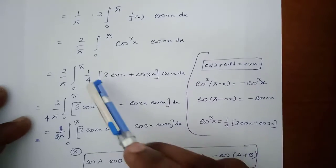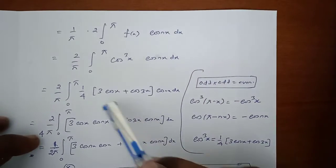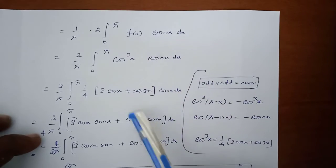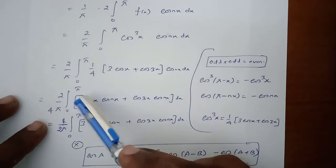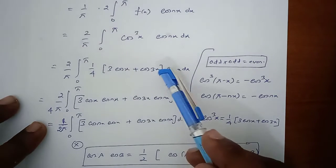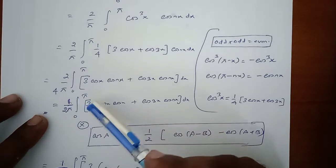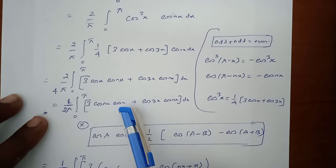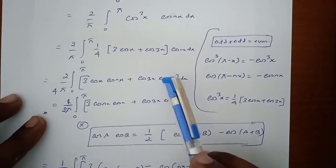We apply the formula for cos³x: cos³x = (1/4)(3cos x + cos 3x). So (2/π) integral from 0 to π of (1/4)(3cos x + cos 3x)·cos(nx) dx. Taking 4 outside as a constant gives (2/4π) = (1/2π) times the integral from 0 to π of [3·cos(nx)·cos x + cos(3x)·cos(nx)] dx.